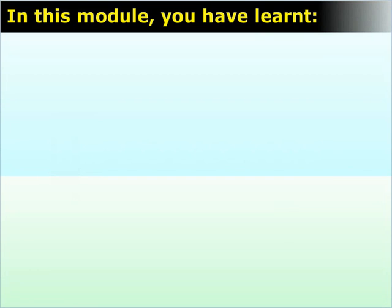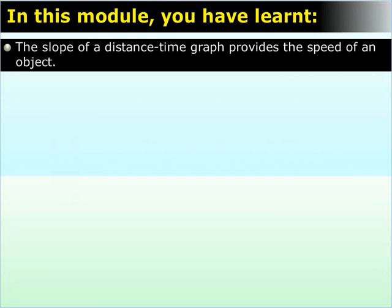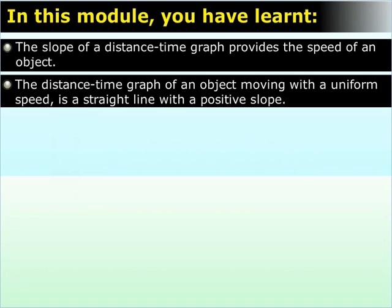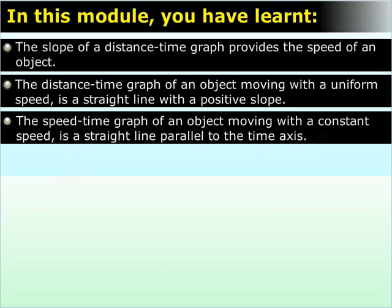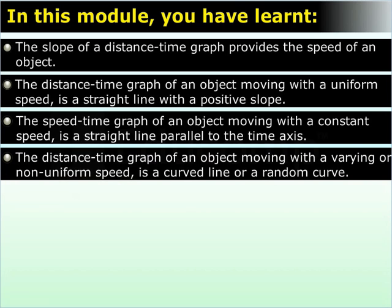In this module, you have learned: The slope of a distance-time graph provides the speed of an object. The distance-time graph of an object moving with a uniform speed is a straight line with a positive slope. The speed-time graph of an object moving with a constant speed is a straight line parallel to the time axis. The distance-time graph of an object moving with a varying or non-uniform speed is a curved line or a random curve.